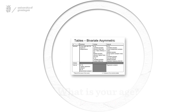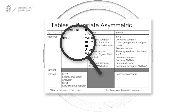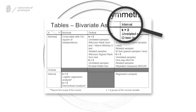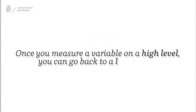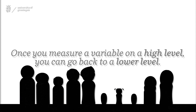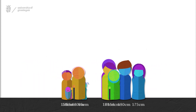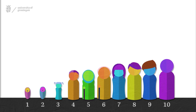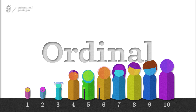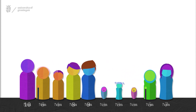Second, the data type determines the statistical techniques you can use to test your hypotheses. Warning: once you measure a variable on a high level, you can go back to a lower level. For example, when you measure length in centimeters, you can subsequently order the people by ranking their lengths from 1 to 10, giving you ordinal data. But if you only measure length on an ordinal scale, you can never change that back to actual length, which is on the ratio scale.